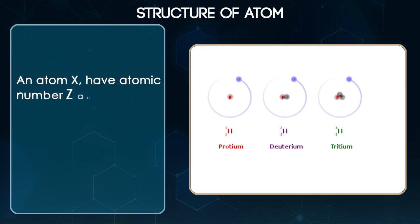An atom X having atomic number Z and mass number A is represented as ZXA.